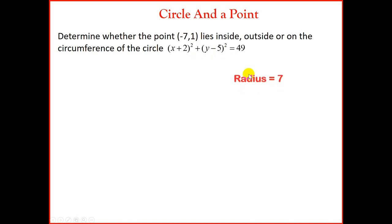So what do we know? We know the radius is the square root of 49, which will be 7. So the distance of the radius is 7 units. Going into the question, we know the center of the circle is (-2, 5). The point given is (-7, 1). We're now going to find the distance between the center and this point.